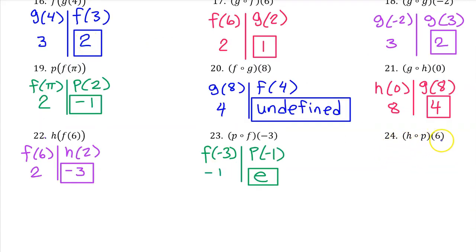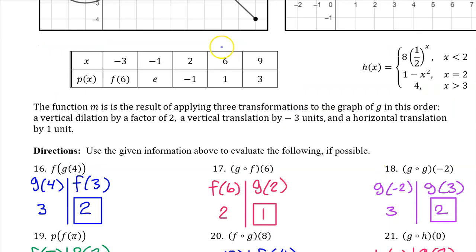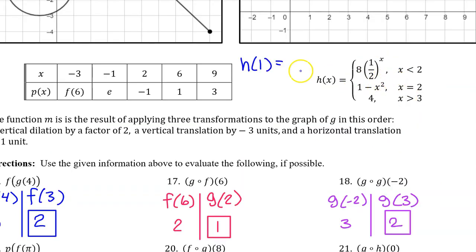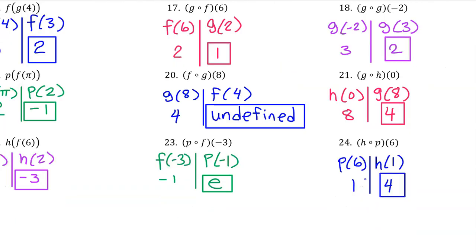Number 24. Working from right to left we begin with P at 6. P at 6 is 1. Next we move on to H at 1. The piecewise function again — X equals 1, which is less than 2, so the top piece applies. We have 8 times (1/2) to the 1 power, which is just (1/2) times 8, which is 4. So the answer is 4.